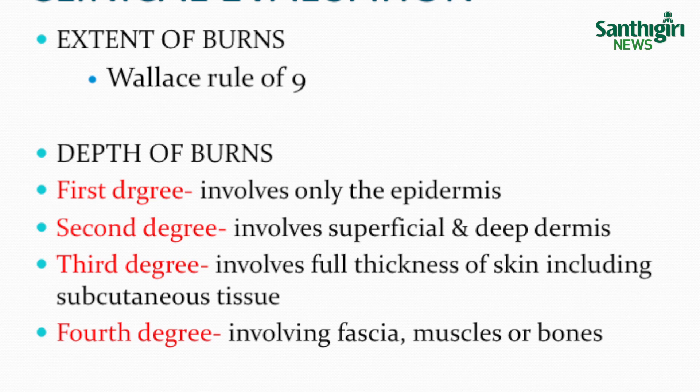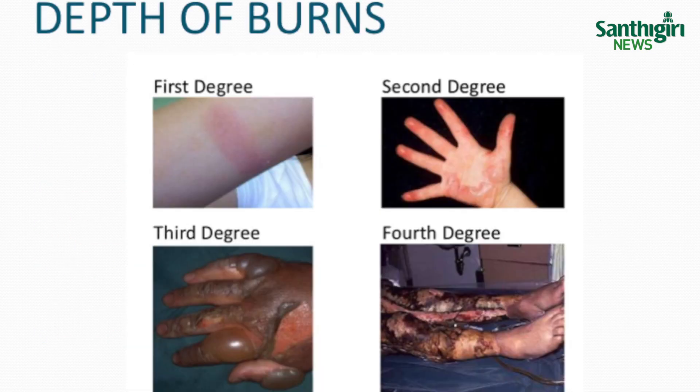Third degree or full thickness burns involve the epidermis and entirety of dermis. These wounds are black and leathery, and are usually insensible and do not blanch. Full thickness burns are best treated by excision and grafting. There will be greater fluid loss by means of oozing of plasma fluid, blood or sweat due to exposure to heat, which should be corrected immediately; otherwise the patient will develop hypovolemic shock.